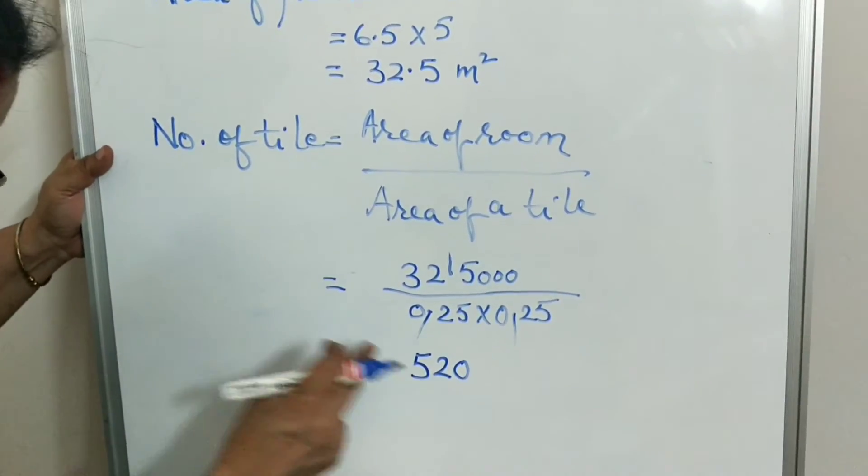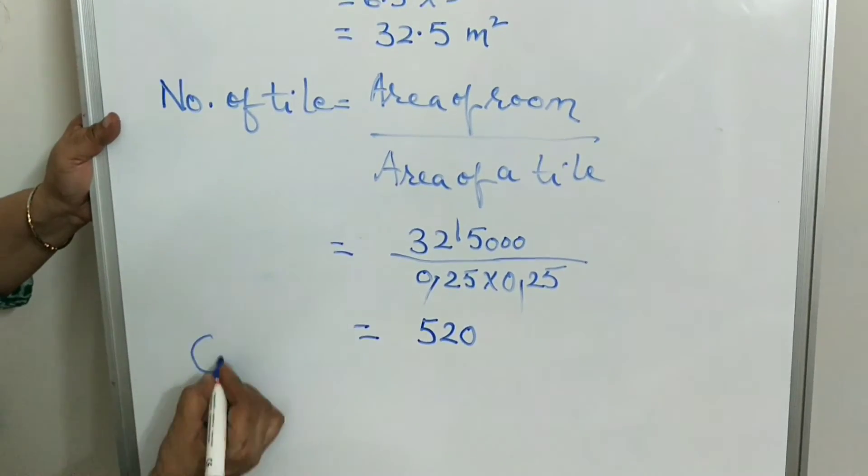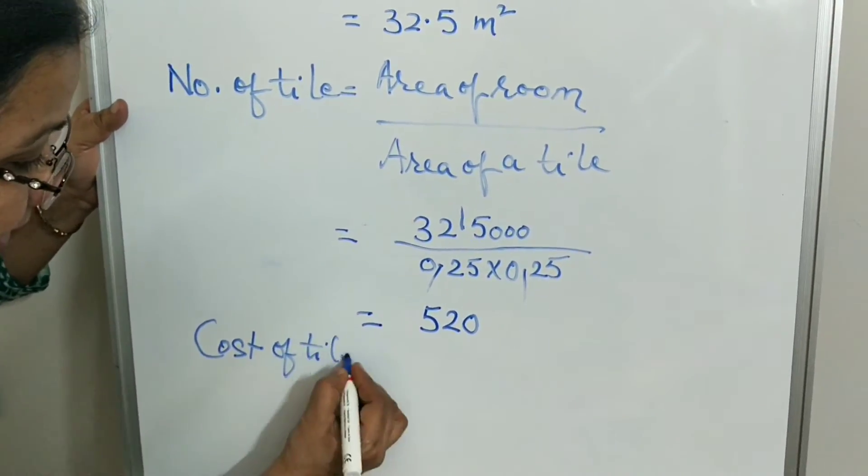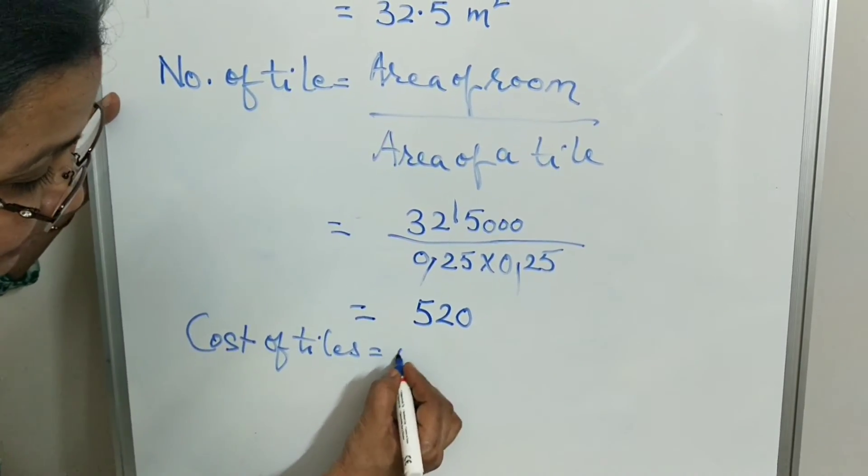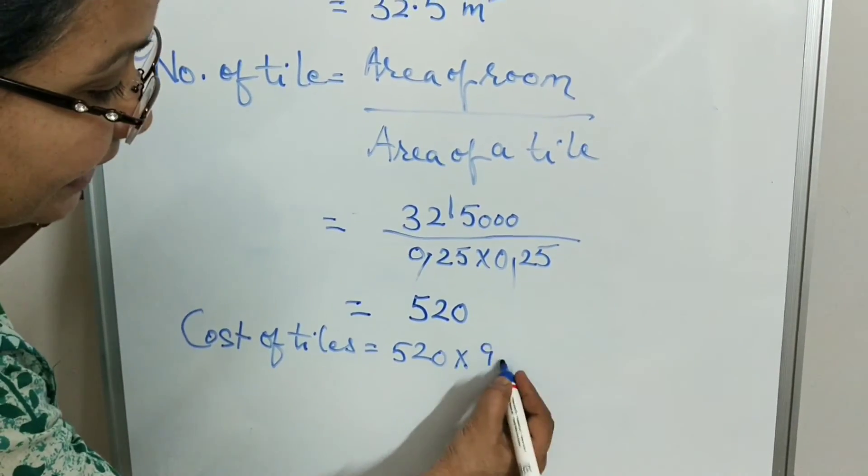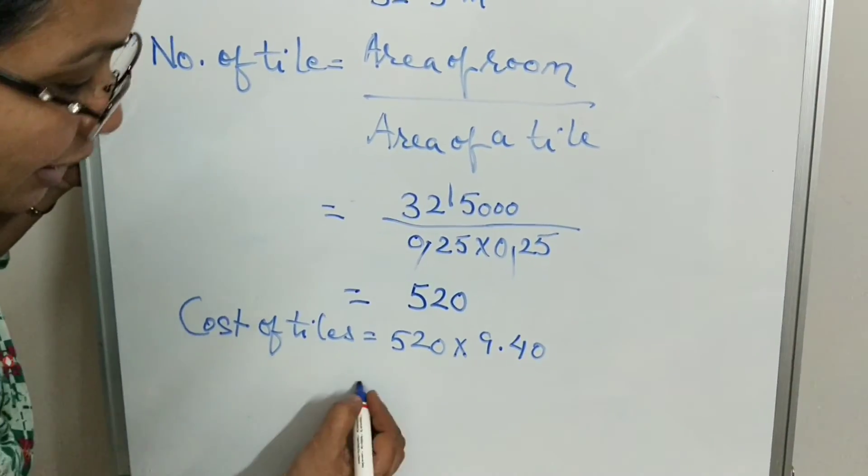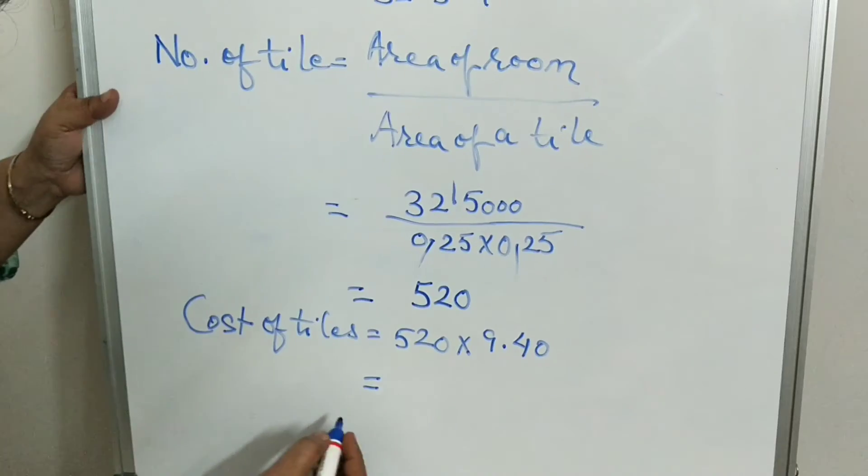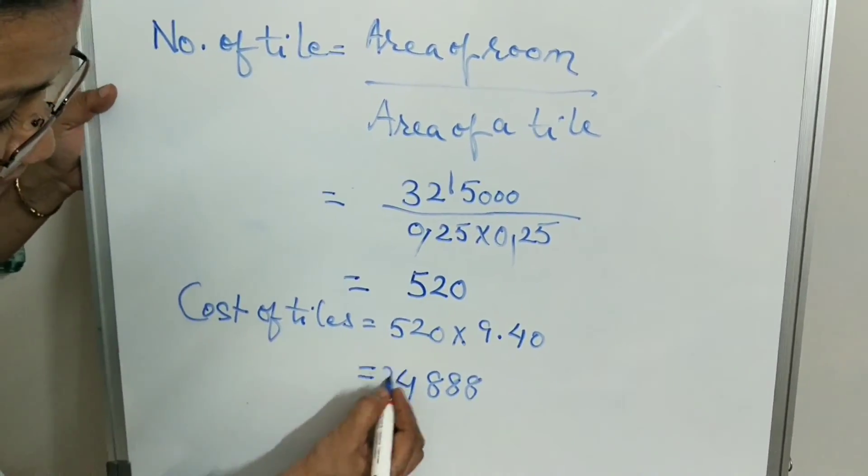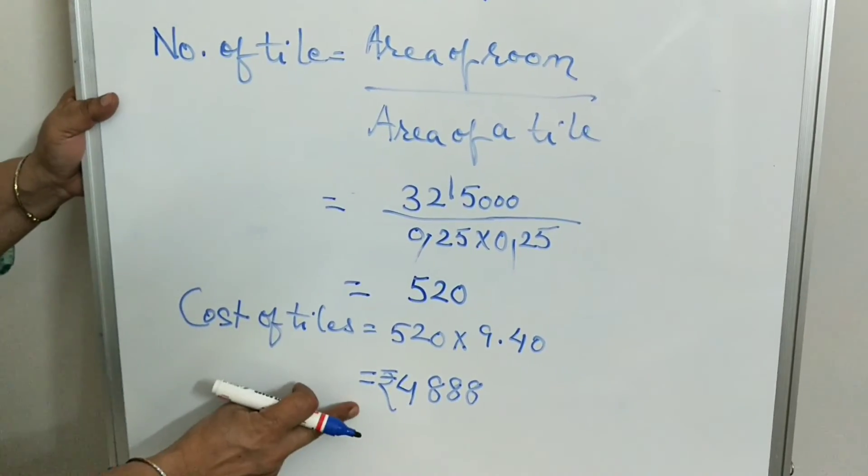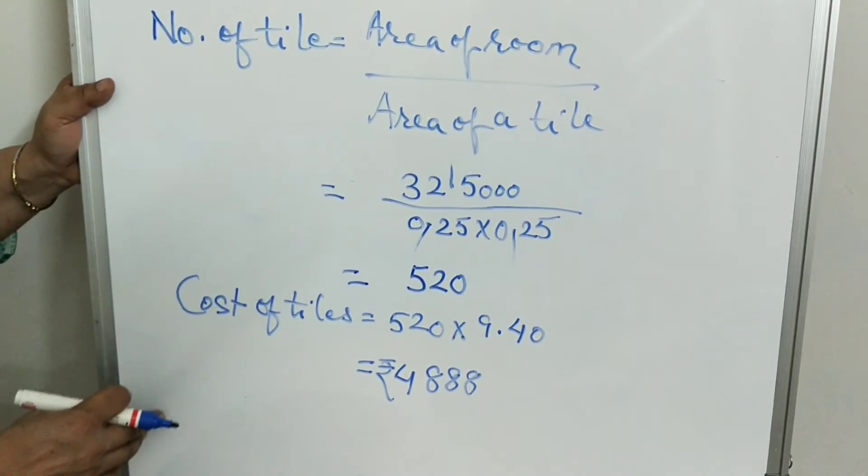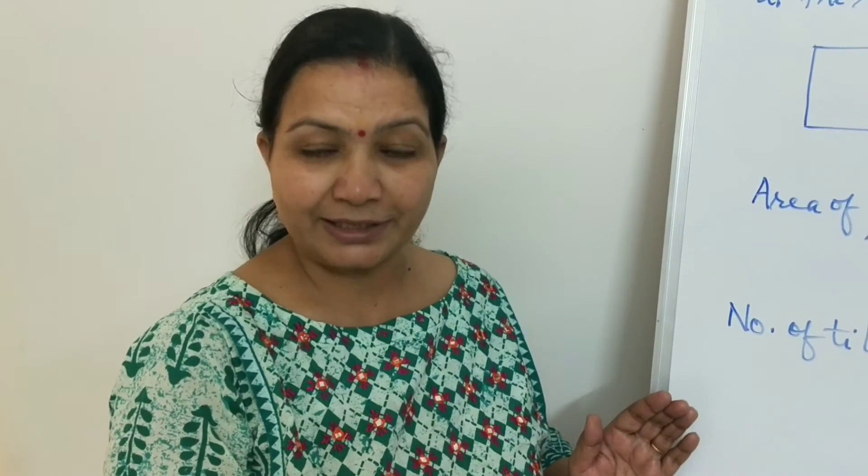Cost of tiles, to find cost of tiles is equal to number of tiles, that means 520 multiply by what is given in the question, 9.40, to find the total cost for the tiles. So the answer is 4,888. That means cost of tiles is equal to 4,888. This is how we solve these questions.